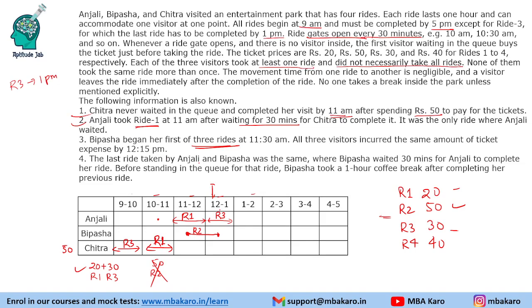The last ride taken by Anjali and Vipasha was the same, and Vipasha waited 30 minutes for Anjali to complete her ride. It cannot be R1 because Anjali already took it. It cannot be R3 either — if Vipasha takes R3, she took three rides and there was also a one-hour coffee break mentioned, making it inconsistent. R2 is also not possible because Vipasha already took R2 as her first ride.